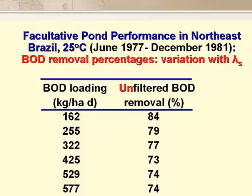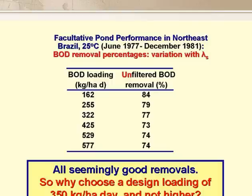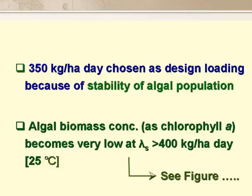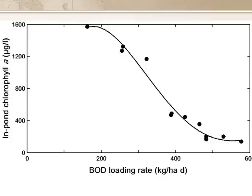This table gives the percentage BOD removals obtained at various BOD loadings — from around 160 to nearly 600 kg per hectare per day — on primary facultative ponds in north-east Brazil at an in-pond temperature of around 25°C. These percentage BOD removals are all pretty good, so why was a design loading of 350 kg per hectare per day chosen for 25°C rather than a higher one? We chose 350 kg per hectare per day on the basis of the stability of the algal population in the pond, as we found that at this temperature the algal biomass concentration, measured as chlorophyll A, became very low when the BOD loading was above about 400 kg per hectare per day, as shown in results from our primary facultative ponds in north-east Brazil.